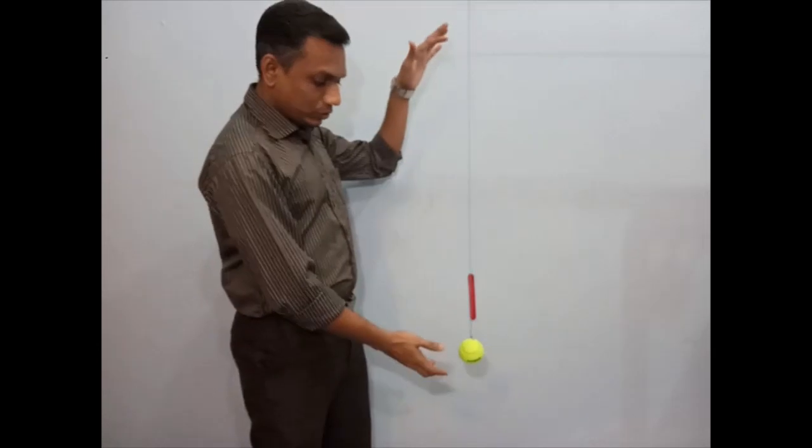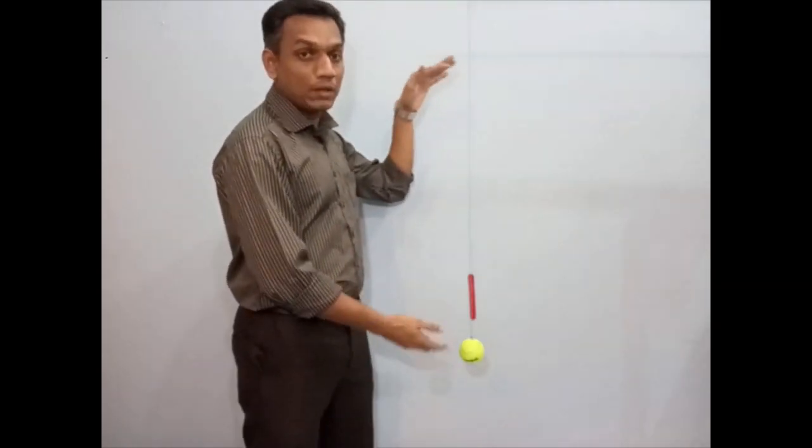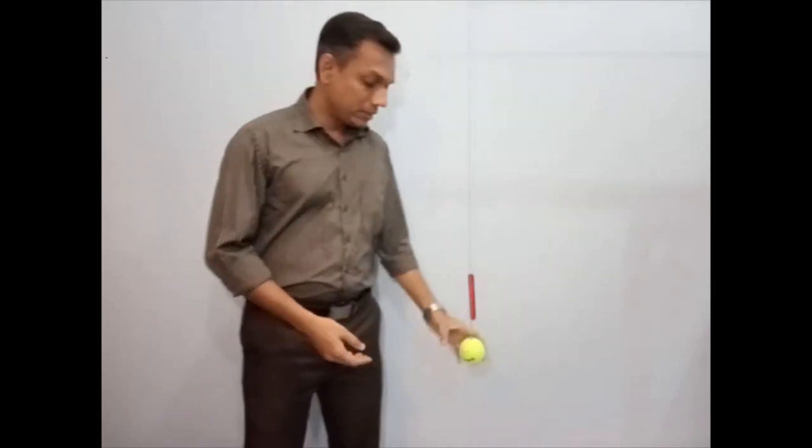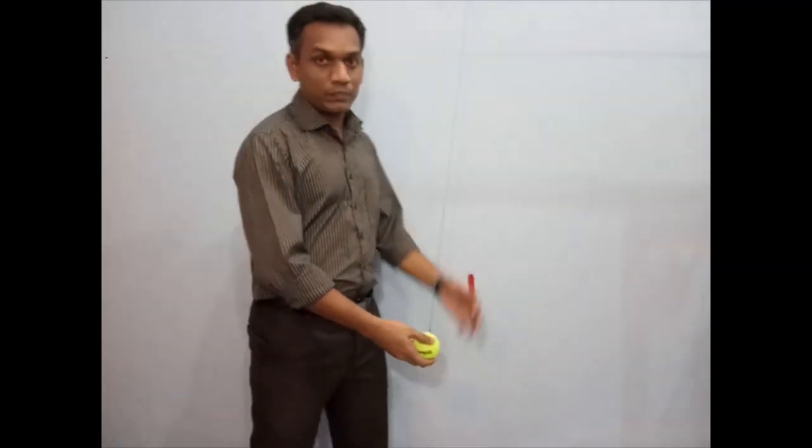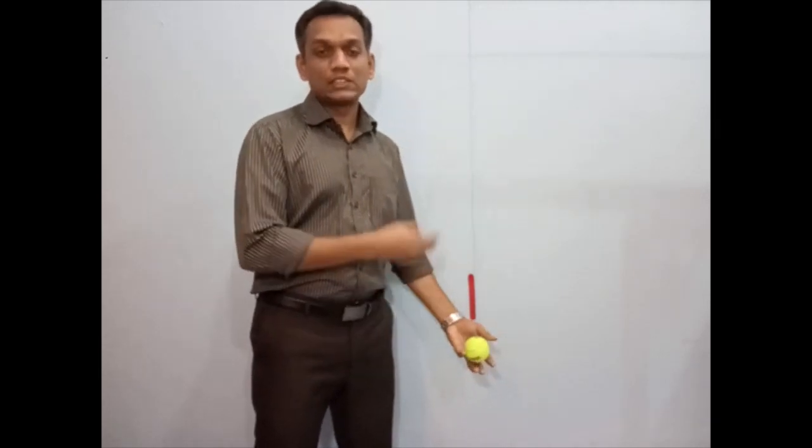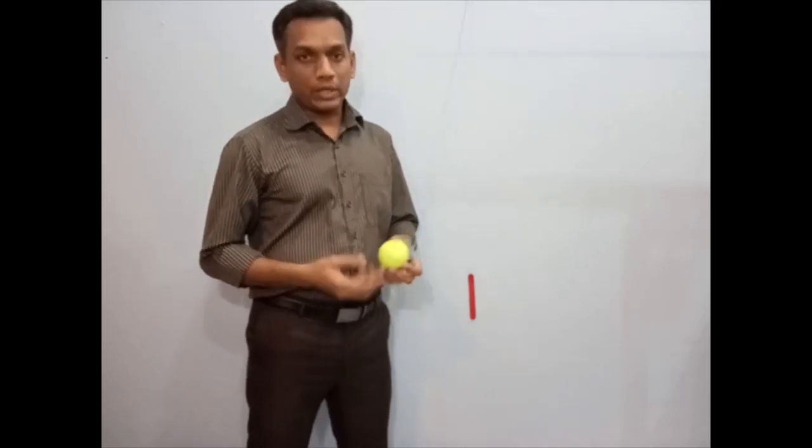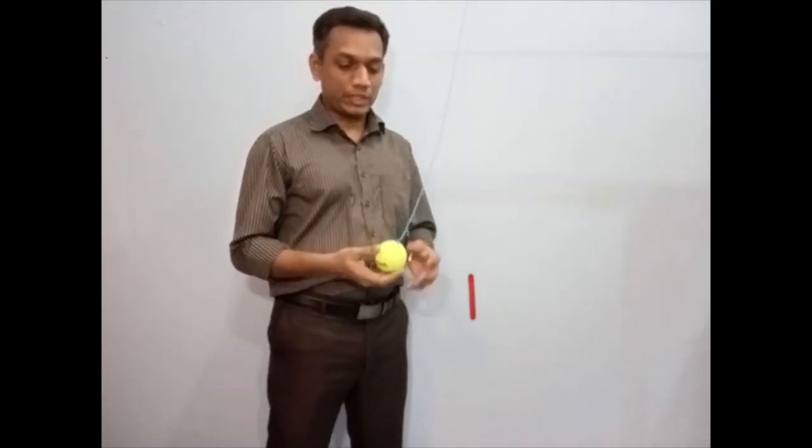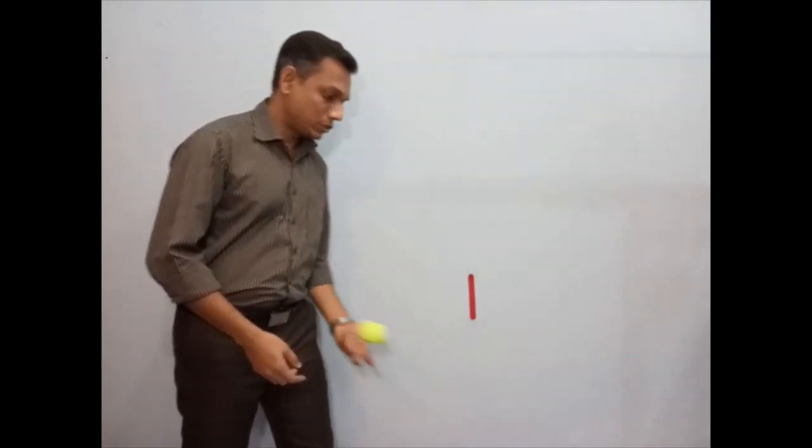The one which is shown in this video, this one we can call it as a simple pendulum. It's nothing, some mass which is hanged by a string and able to swing freely. So this is known as a simple pendulum. Mostly they use metal bob or iron bob instead of this ball. But here I have taken a ball which is tied with a string and free to swing.